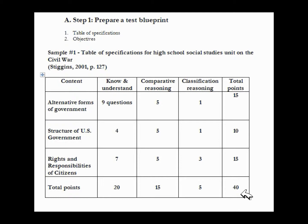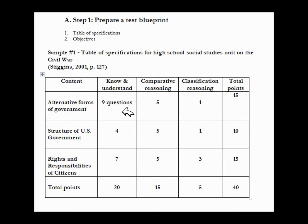Generally, we're going to want to generate more items — at least twice as many items — for a test pool as you have on the final test, so that we can have different forms of the test for makeups. If we develop a test with 40 questions, we want to develop twice as many questions to go into an item pool, so that we can do makeup tests and create new forms. We need alignment of the types of questions and the content to have that consistency.